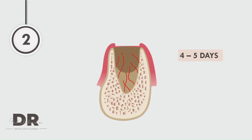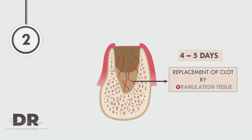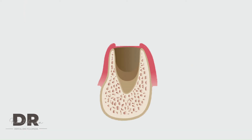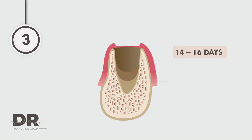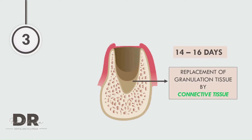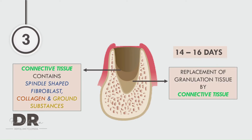It then moves on to the second stage of healing, which happens in about four to five days. In this stage, the clot gets replaced by granulation tissue. The third stage happens around 14 to 16 days, where the granulation tissue gets slowly replaced by connective tissue. Connective tissue is a collective of spindle-shaped fibroblasts, collagen, and ground substances.